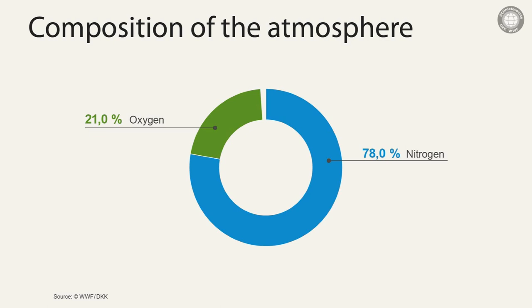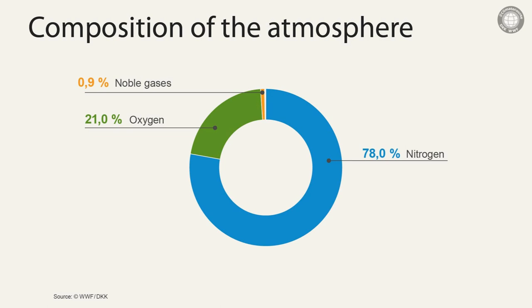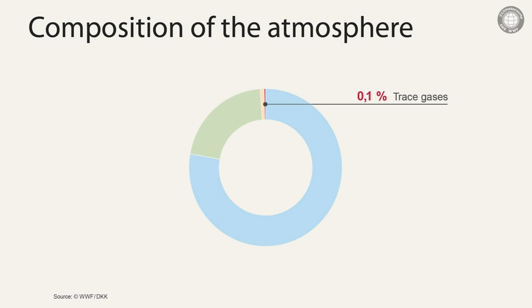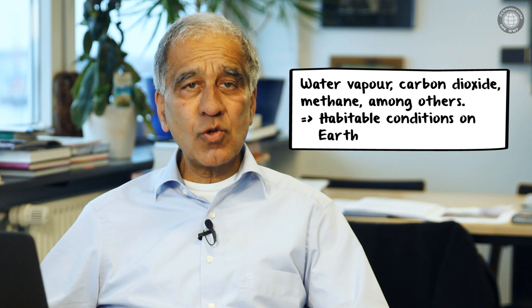The climate of a planet is mainly determined by the composition of its atmosphere. Earth's atmosphere is made up of about 78% nitrogen and 21% oxygen, and then there are several noble gases amounting to about 0.9% — that would already be 99.9%. If this were it, our planet would be an icy wasteland. But fortunately, there are still some trace gases, some of which are called greenhouse gases, and these greenhouse gases warm the planet. Water vapor, carbon dioxide, and methane are particularly important trace gases. These three gases ensure the relatively mild conditions on this planet and make it habitable.